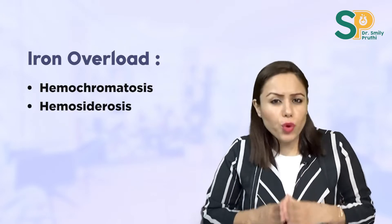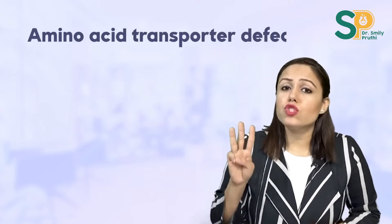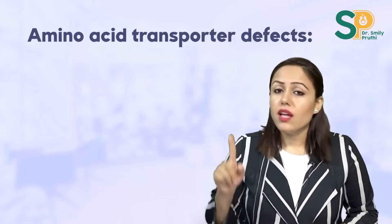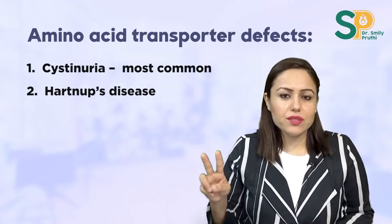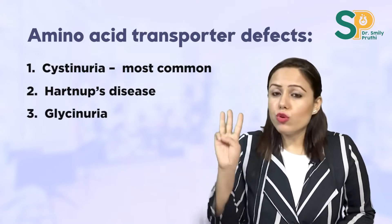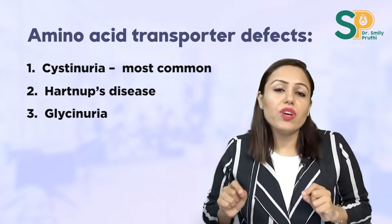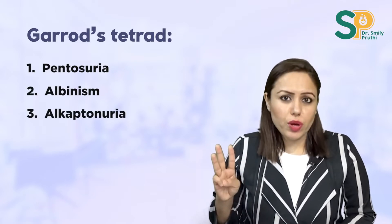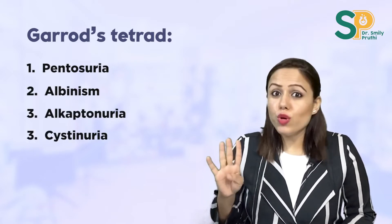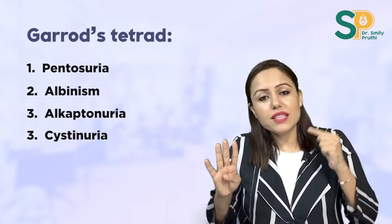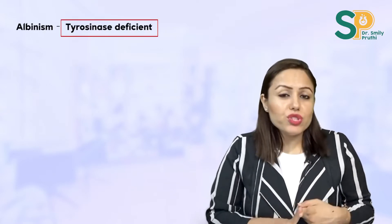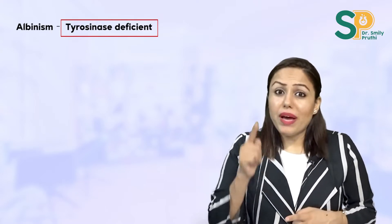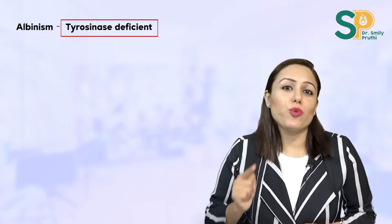Do the three transporter defects in amino acids: number one cystinuria, number two Hartnup disease, number three glycinuria. Out of these three, cystinuria is most common. Then Garrod's tetrad — four diseases: pentosuria, albinism, alkaptonuria, and cystinuria. The enzyme deficient in albinism is tyrosinase, which is an oxidase requiring copper. Every line in this video is itself a potential question.